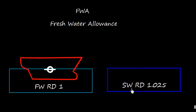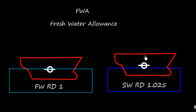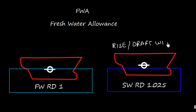We know that salt water is much heavier or much denser than fresh water. So what happens if the vessel goes from fresh water to salt water? The salt water is heavier or denser, so it will support the vessel and the vessel will rise, meaning the draft will decrease.